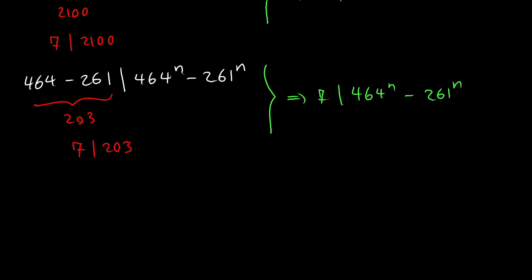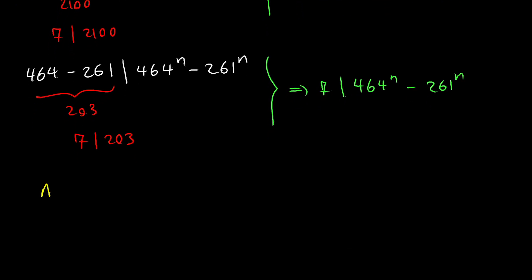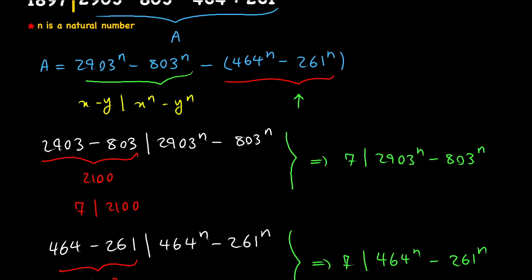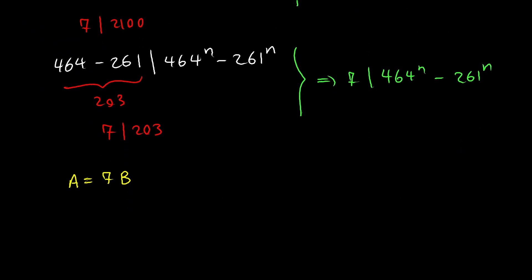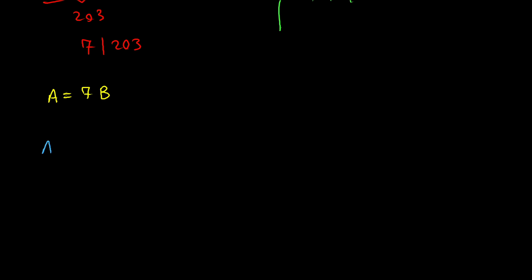So we can write that a equals 7 times some integer b. Now let's rearrange the terms in a and say that a equals 2903 to the nth power minus 464 to the nth power minus the quantity 803 to the nth power minus 261 to the nth power.